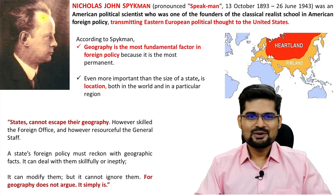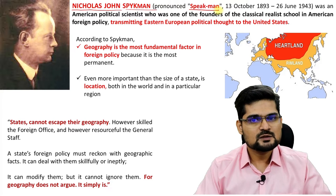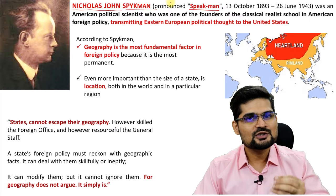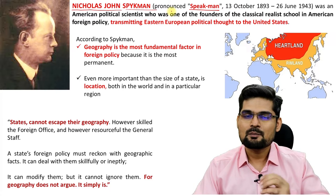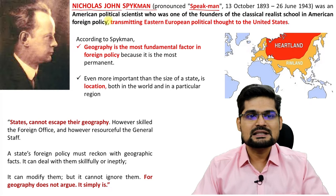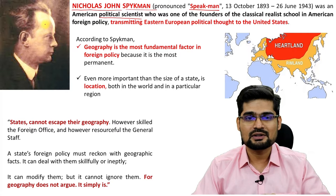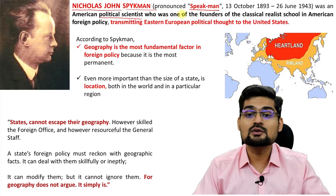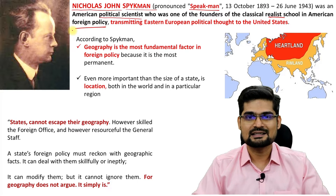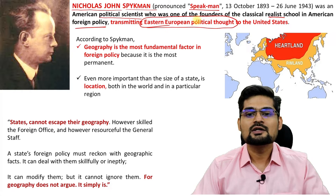Now let's learn about this person called Nicholas John Speakman. His concept is related to geostrategy and geopolitics, part of political geography. He was basically an American political scientist — not a geographer — and he was one of the founders of the classical realist school in American foreign policy, transmitting Eastern European political thought to the US.